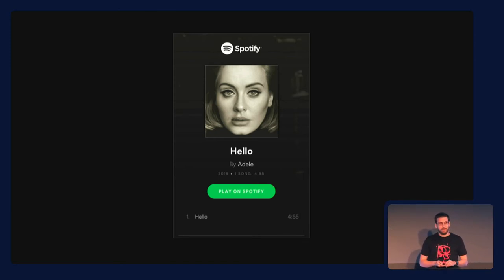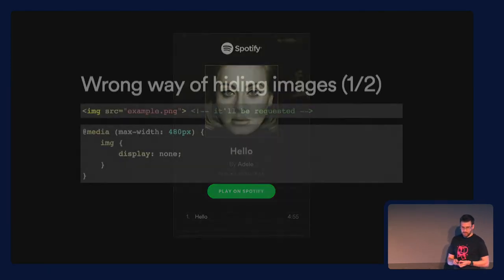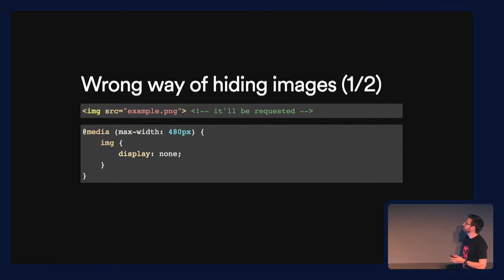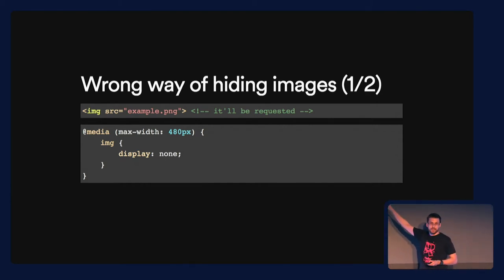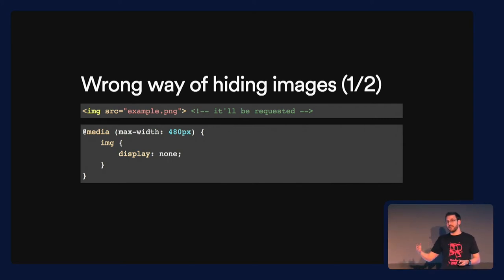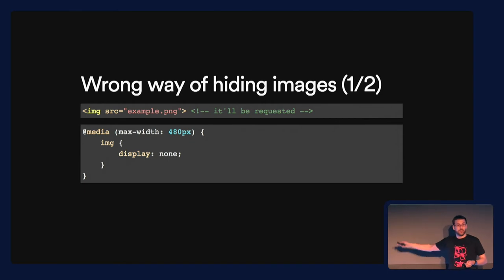Think twice, because there are many use cases in which we can save a request for an image. Someone might say, let's use a media query and hide the image with display:none. The problem with this is that the browser doesn't really care about the CSS. The browser is going to parse the HTML, see that image tag, and make the request. So even if we are hiding it using CSS, the browser will still request it. A better way would be to set that image using CSS.